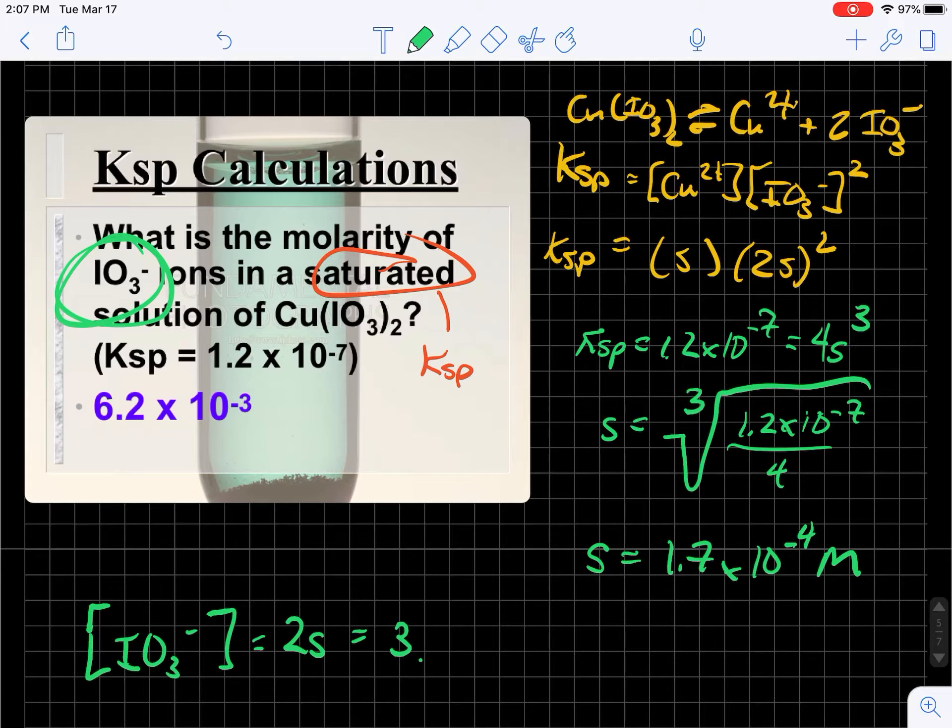And I get three point one times ten to the minus three for s. And then we just multiply that by two.